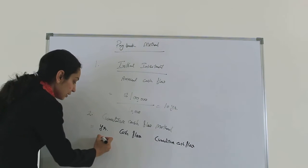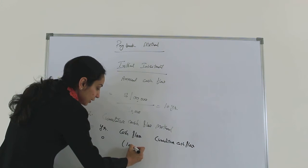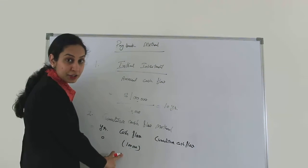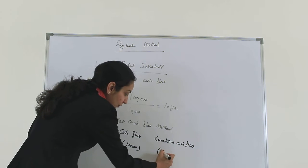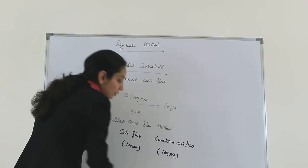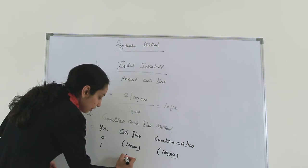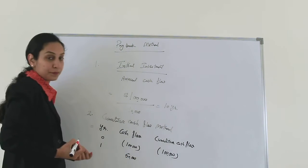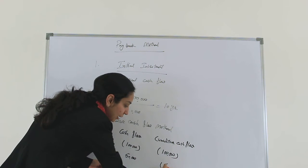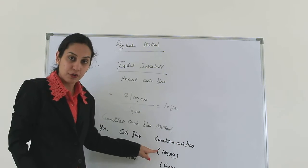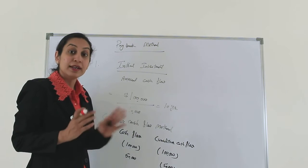In year zero — the present year — the company invested $100,000. That is why we put it in brackets, because it is a negative cash flow. The cumulative cash flow for year zero is negative $100,000. For year one, the company receives $50,000. The cumulative cash flow becomes negative $50,000, since we had negative $100,000 before and received $50,000.